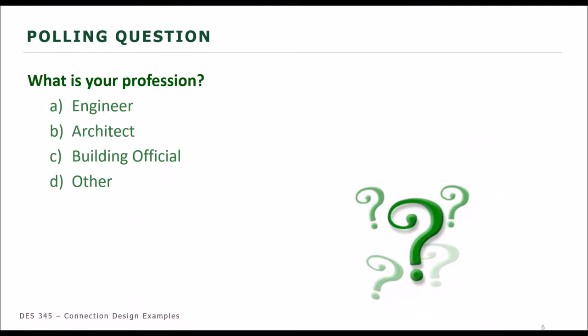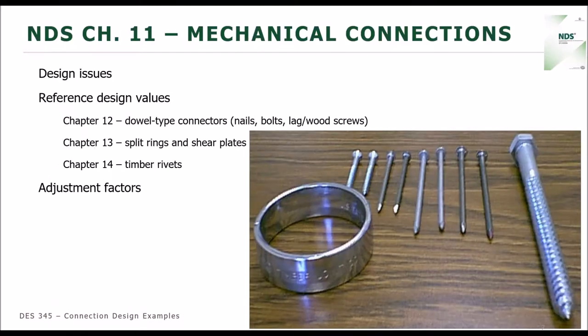I anticipated most of you folks would be engineers, but that's all right. I think we have some things in here that will be useful for building officials and architects as well. So when you go into the 2015 NDS, Mechanical Connections — the primary overarching chapter for the design of mechanical connections — is going to be Chapter 11. Chapter 11 is going to be your primary design issues. It's going to tell you where to get reference design values for the different connectors included in the NDS, as well as some adjustment factors that are relevant.